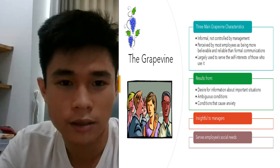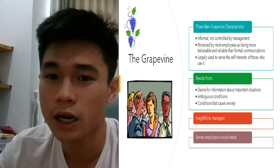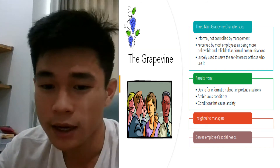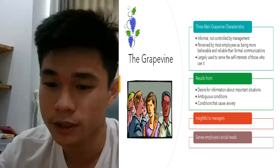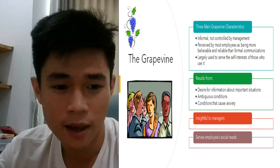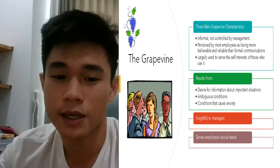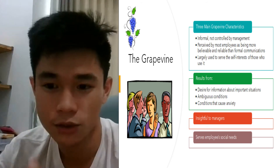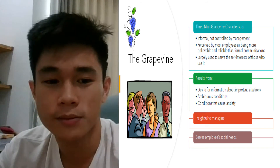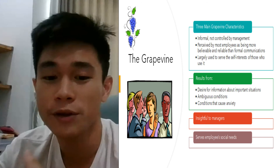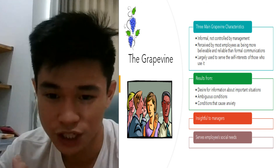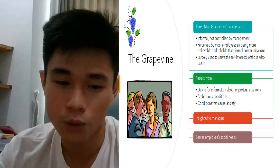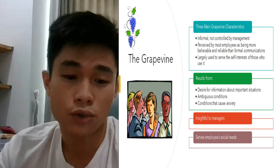In the next slide, we look at the grapevine and its three main characteristics. This is a common network that has been found to be an effective mode of communication. Typically, the grapevine is not controlled by management, nor do they feed it information. However, employees see it as a very believable and reliable form of communication. The grapevine has no formal purpose but mainly serves the self-interest of those who use it, helping people get information about important but ambiguous situations and reducing anxiety while fulfilling a social need to connect.